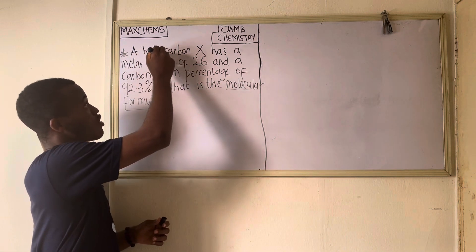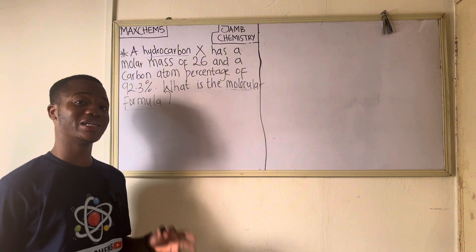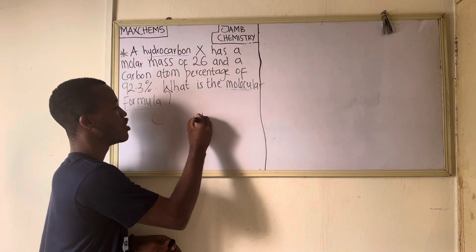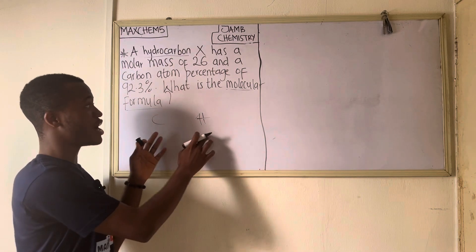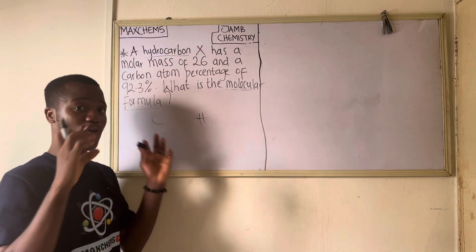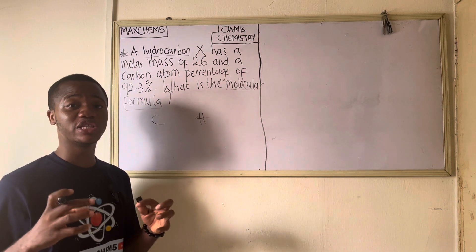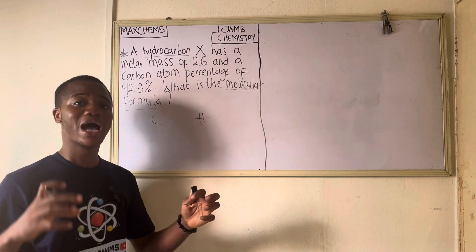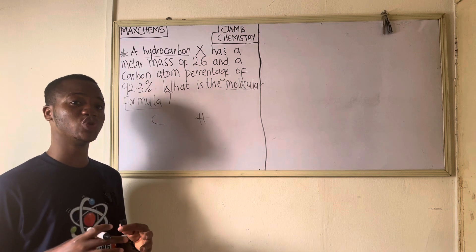If you check the question very well, you'll be able to deduce that this particular compound is a hydrocarbon, which tells us that this compound contains only carbon and hydrogen. From the name hydrocarbon, it contains only carbon and hydrogen. So to get the molecular formula of this compound, first we need to get our empirical formula, because there is a formula that connects the empirical formula and the molecular formula.